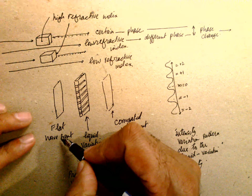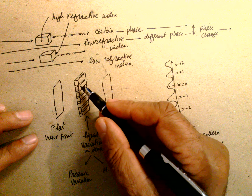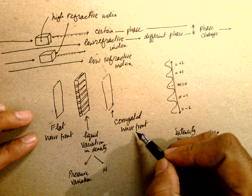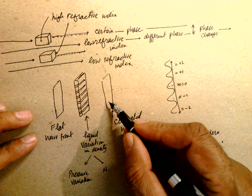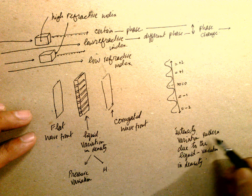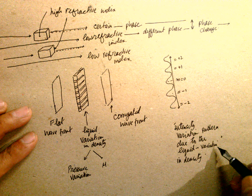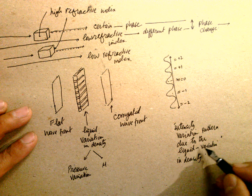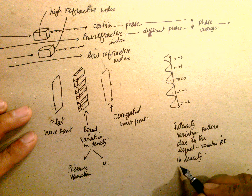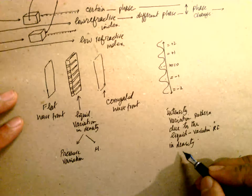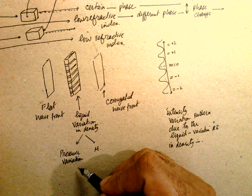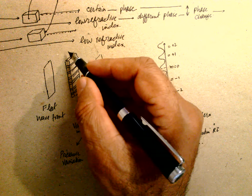The flat wavefront, in the presence of this phase variation, becomes a corrugated wavefront. We have a different phase shift at each point, and as a result there is an intensity variation. The diffraction pattern is due to the liquid refractive index variation, which is experienced as a pressure variation in the liquid because of the ultrasonic waves.